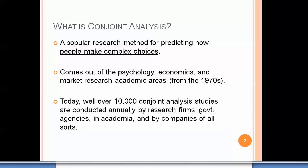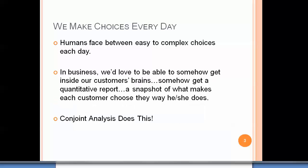It comes out of the psychology, economics, and market research academic areas from the 1970s. Today, well over 10,000 conjoint analysis studies are conducted annually by research firms, government agencies, academia, and companies of all sorts.